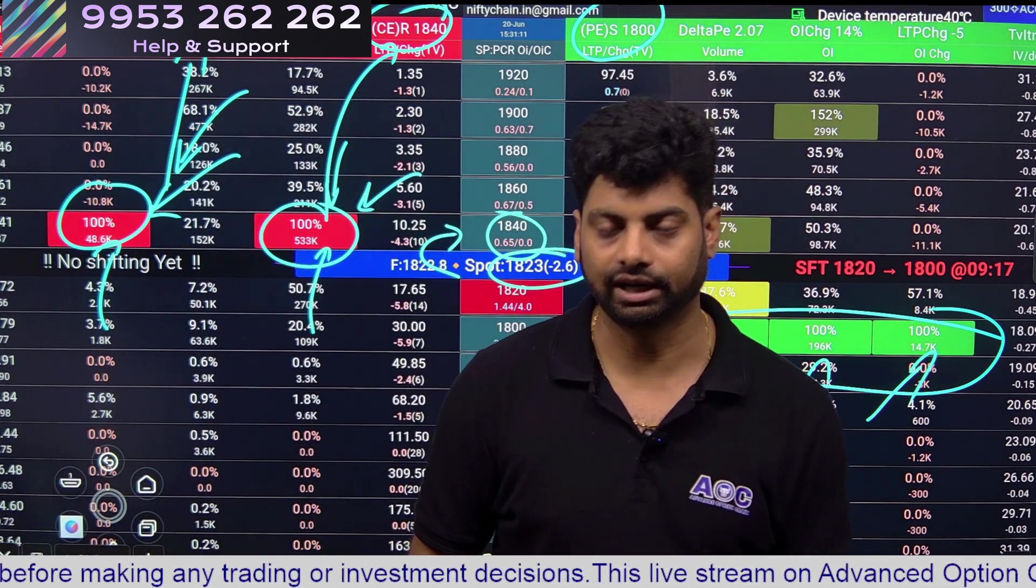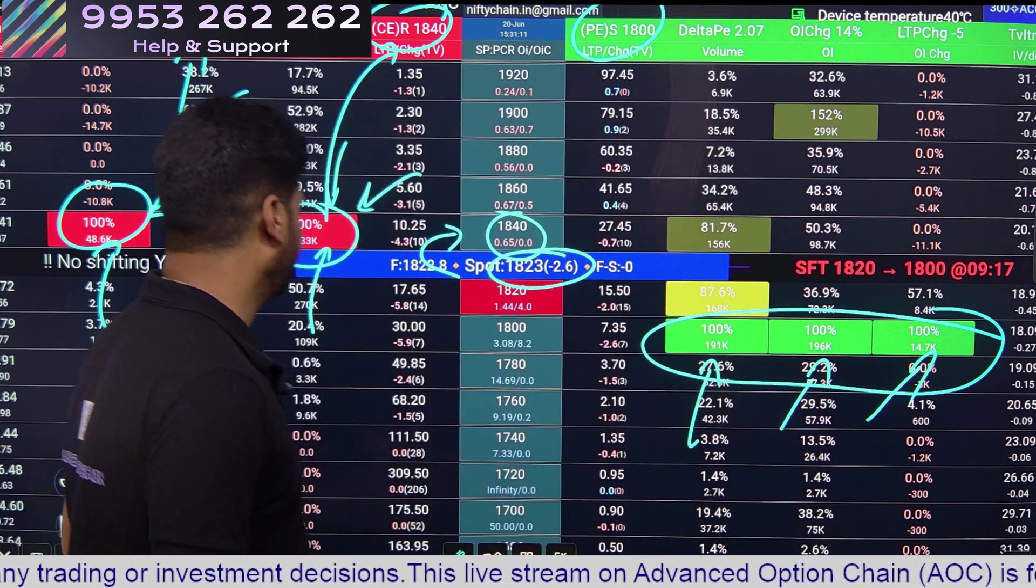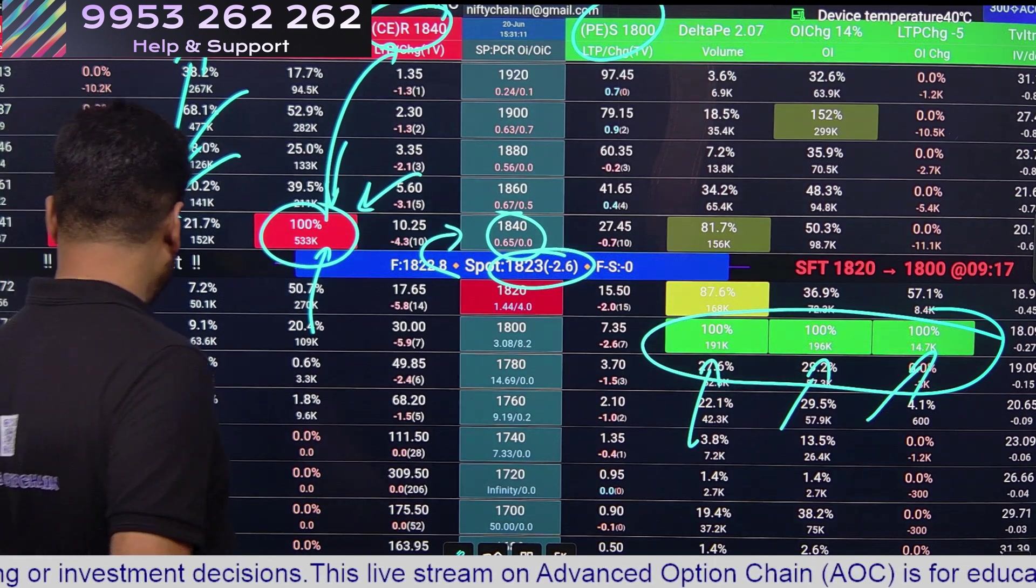We will learn how we can identify which supports are strong, which support is STT, which is STV and all that in chapter 4.